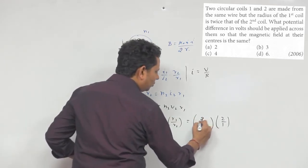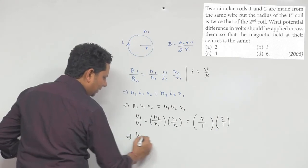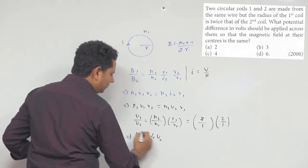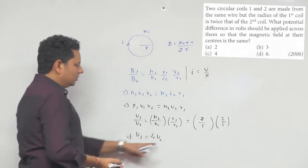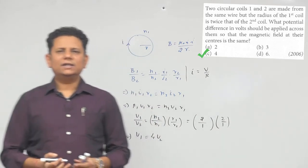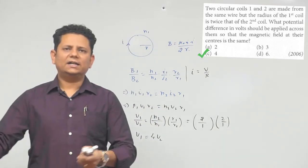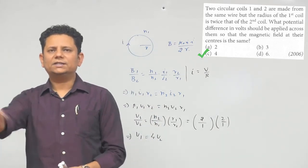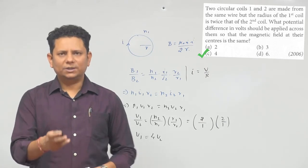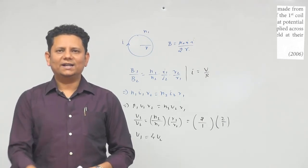इस basis पर: V1/V2 = 2 × 2 = 4, which implies V1 = 4·V2। इस ratio में potential difference लगाना होएगा such that दोनों coils के center पर magnetic field same रहे। So option C — 4 — is the right answer.